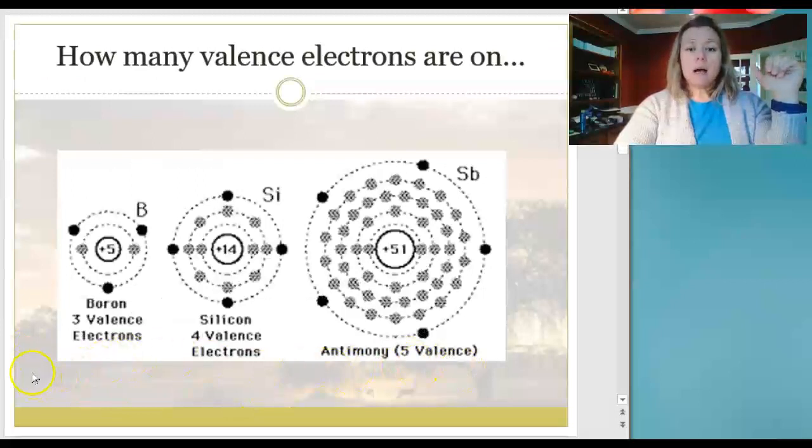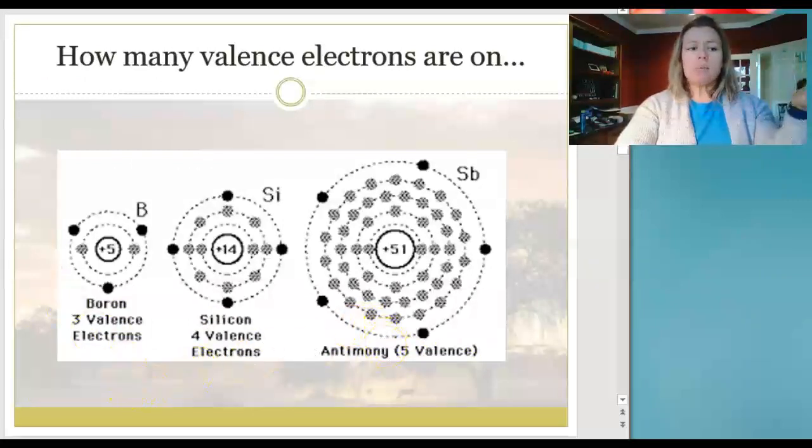Let's practice this. How many valence electrons do you see in boron, silicon, and antimony? I'm not talking about all the electrons total, because boron here has five, silicon has 14, and antimony has 51. The only ones we care about when we think about bonding are the ones that are orbiting in the outermost electron level. Boron has three, silicon has four, and antimony has five valence electrons.